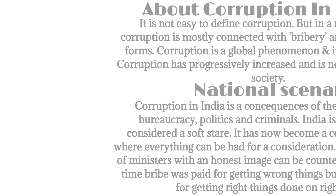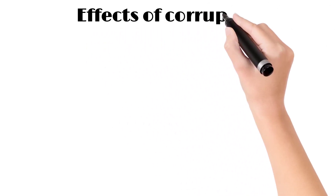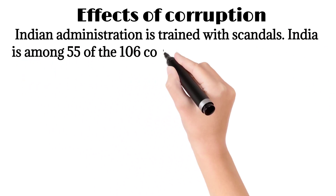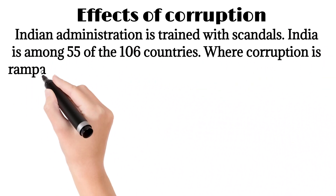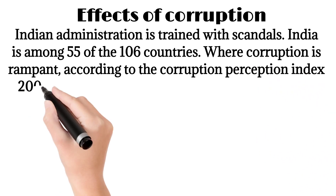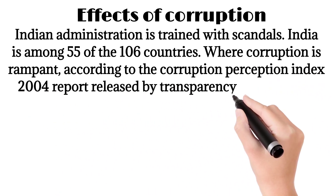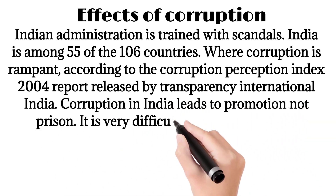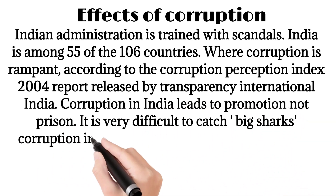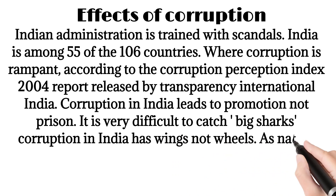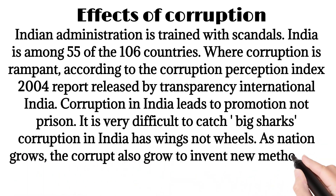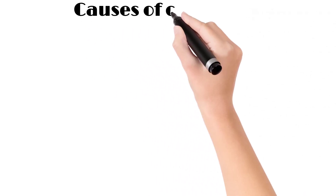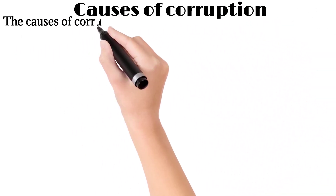Effects of corruption: Indian administration is tainted with scandals. India is among 55 of the 106 countries where corruption is rampant, according to the Corruption Perception Index 2004 report released by Transparency International. Corruption in India leads to promotion, not prison — it is very difficult to catch big sharks. Corruption in India has wings, not wheels. As the nation grows, the corrupt also grow to invent new methods of cheating the government and public.